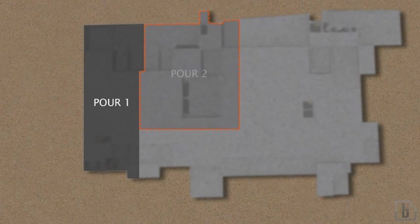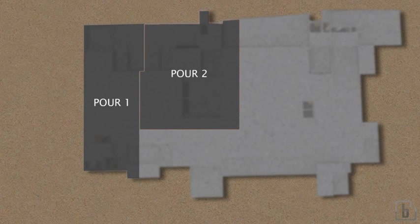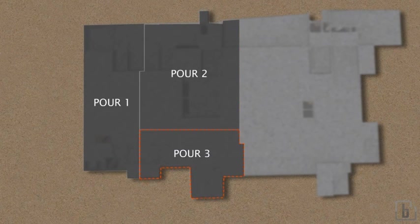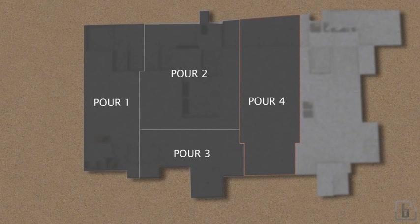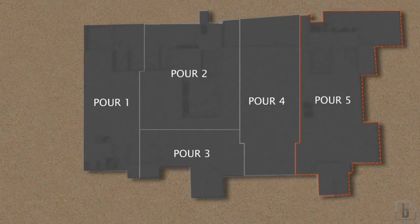Concrete shall not be dropped from a height more than 1.0 meter. In such cases, trunking or chutes shall be used and shall be kept closed and used in such a way so as to avoid segregation.